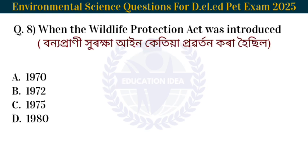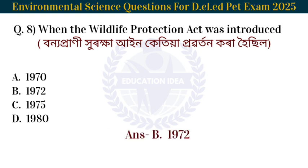Next question: When was the Wildlife Protection Act introduced? Bhaudya puni hurokkhain ki tiyan purvataan kora hoi shil. The answer is 1972. The Wildlife Protection Act was introduced in 1972.